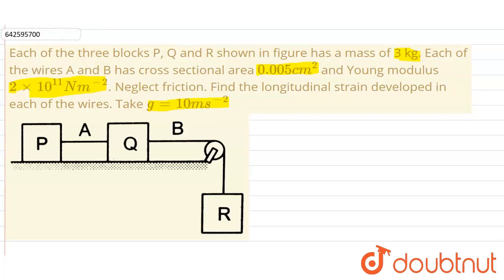We have been given in the figure that three blocks P, Q, and R are connected by strings A and B respectively. P and Q lie on a horizontal frictionless surface. The weight Mg on block R will act vertically downwards.